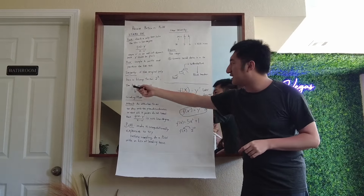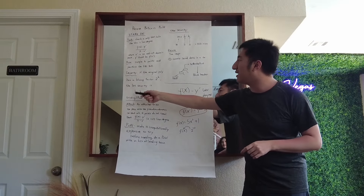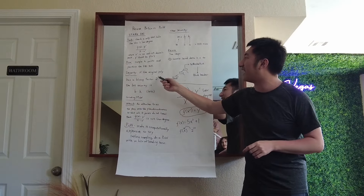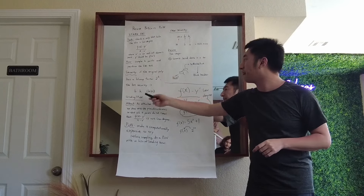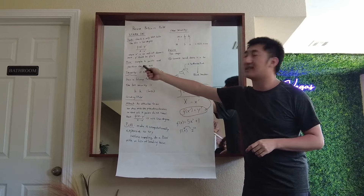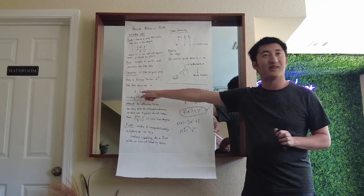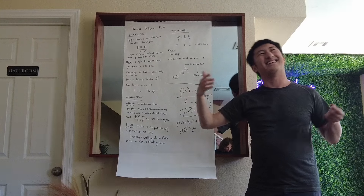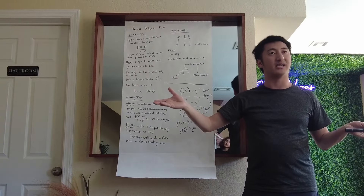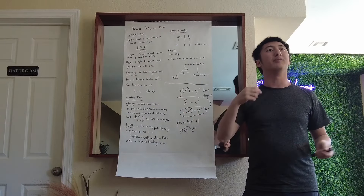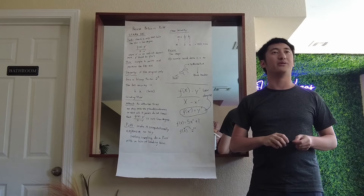The security will be b times k, where b is the blow-up factor and k is the number of queries you do. Usually you want this value to be something like 90, 100, or ideally 128, meaning you have sufficient security in the protocol.